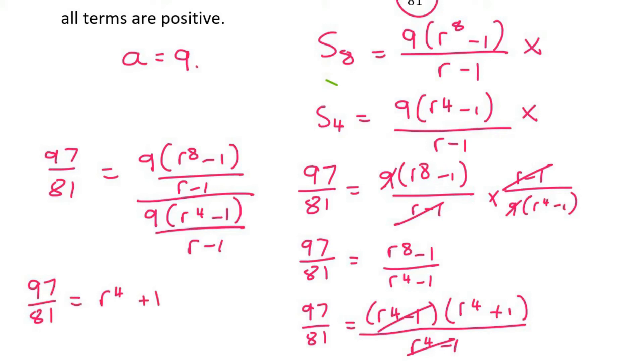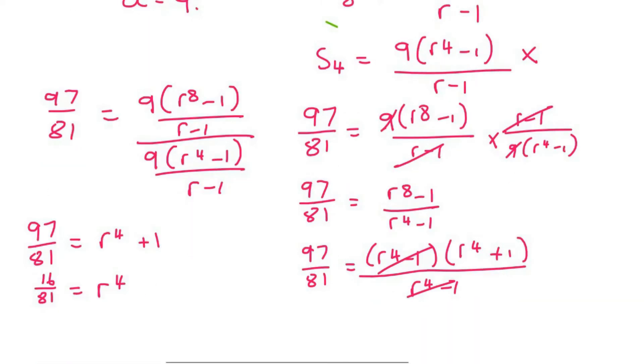We then take the 1 over. Oh, it's working out very nicely. So 16 over 81 is equal to R^4. We can take the fourth root. So we can take the fourth root on both sides. And so R is going to be 2 over 3.